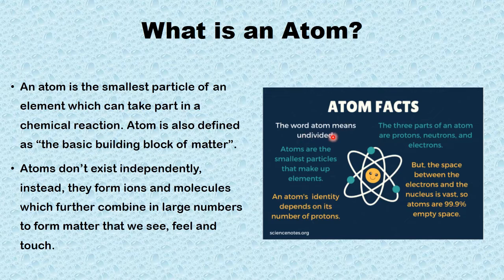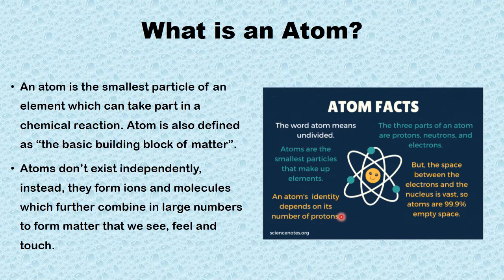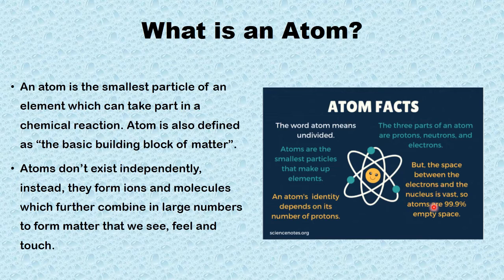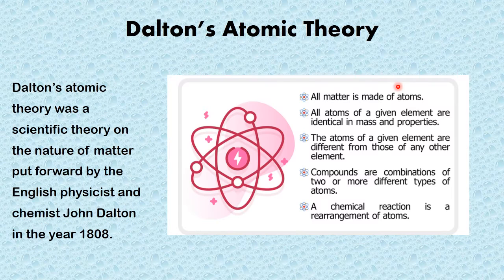The word atom means undivided. Atoms are the smallest particles that make up the element. An atom's identity depends on its number of protons. The three parts of an atom are protons, neutrons, and electrons. But the space between the electrons and the nucleus is vast, so atoms are 99.9% empty space.